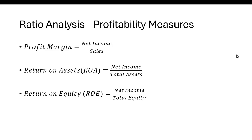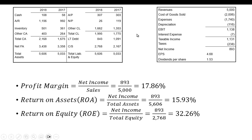The three I want to look at here are profit margin, which is net income over sales; return on assets, which is net income over total assets; and return on equity, which is net income over total equity. So how do you compute these? I have a balance sheet and an income statement here. For the profit margin, we just need the income statement — it's going to be net income of $893 divided by revenues of $5,000, and it's 17.86%.